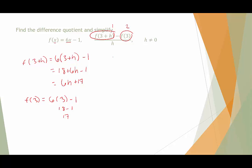Now I'm going to put everything back together. So it's going to be 6h plus 17 minus 17 over h. And let's simplify this. 17 and minus 17 cancel. And we have 6h divided by h, which is equal to 6.